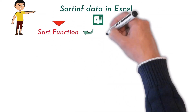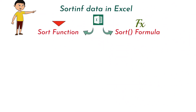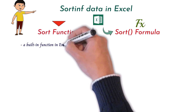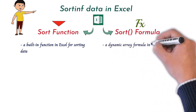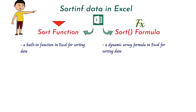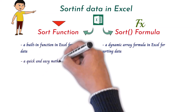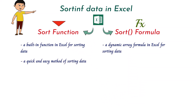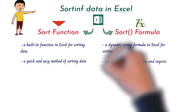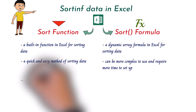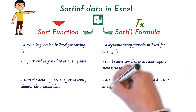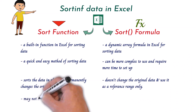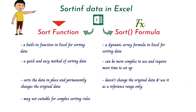In Excel, the sort function and the sort formula are two different ways of sorting data. The sort function is a built-in function in Excel, while the sort formula is a dynamic array formula. The sort function is quick and easy, but the sort formula can be more complex to set up. The sort function sorts data in place and permanently changes the original data, whereas the sort formula doesn't change the original data. The sort function is not suitable for complex sorting rules, whereas the sort formula is often used to create complex sorting rules.